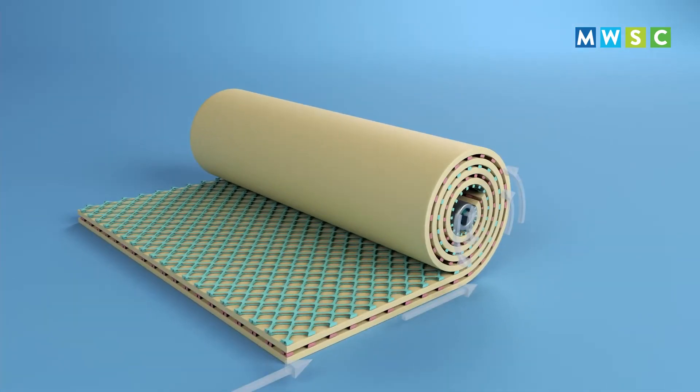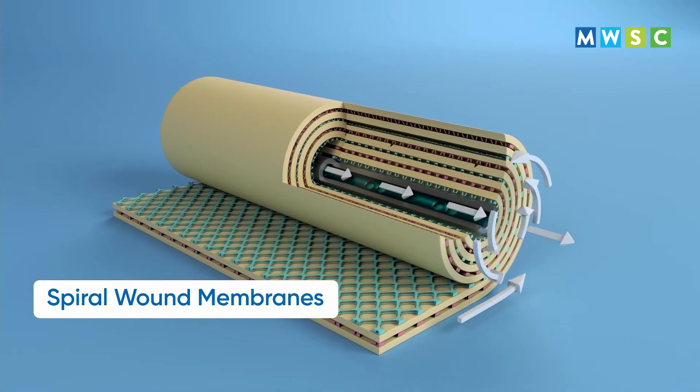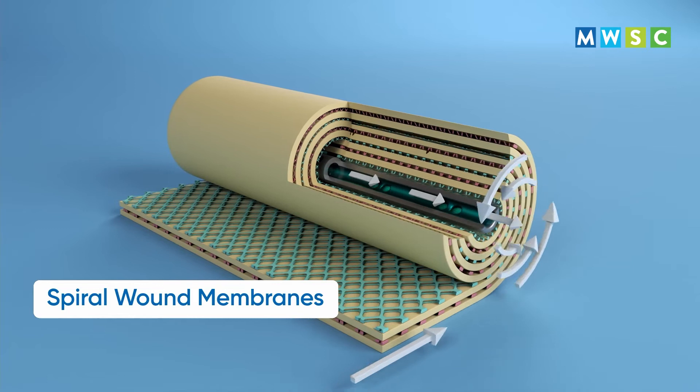The desalinated water then flows to a pipe which is in the center of the membrane. The membrane filter material is coiled around the central collection pipe.